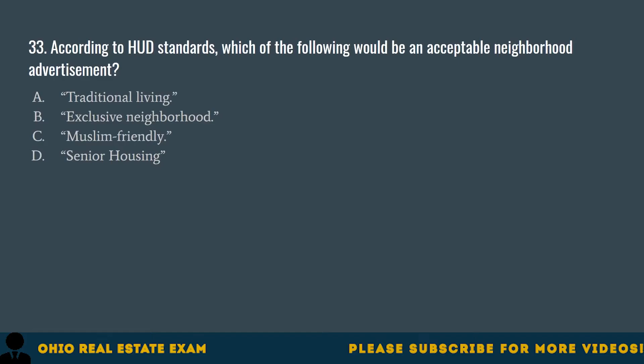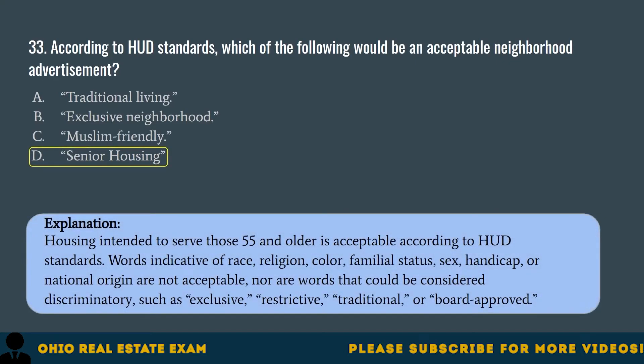Question 33. According to HUD standards, which of the following would be an acceptable neighborhood advertisement? A. Traditional living. B. Exclusive neighborhood. C. Muslim-friendly. D. Senior housing. The correct answer is D. Senior housing. Housing intended to serve those 55 and older is acceptable according to HUD standards. Words indicative of race, religion, color, familial status, sex, handicap, or national origin are not acceptable, nor are words considered discriminatory such as exclusive, restrictive, traditional, or board-approved.